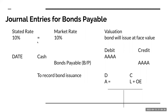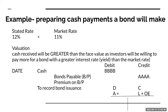If the stated rate and the market rate are exactly the same, the cash that I receive will be equal to the amount of the bond payable. Now, what happens if I'm offering 12% and the market rate's only 11%? People are going to want my bond.